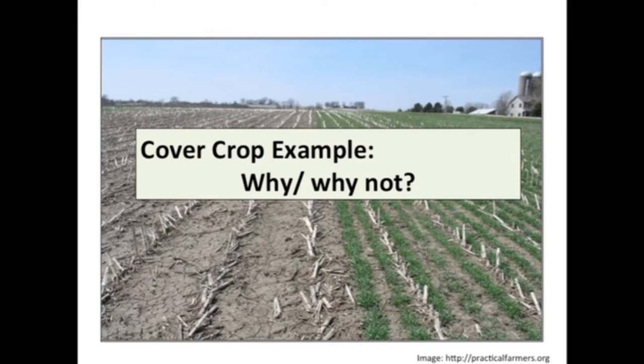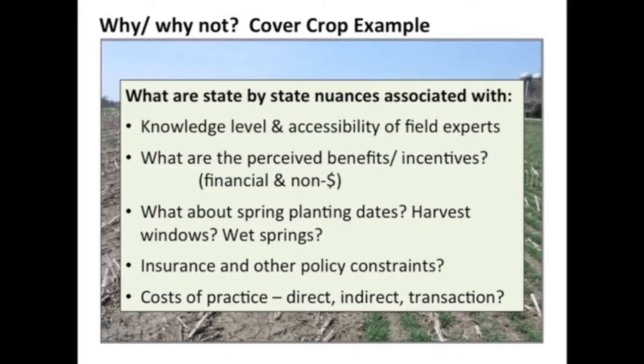Thinking about practices in the context of why and why not — using cover crops as an example — the conversation will cover state-by-state nuances in knowledge levels and access to knowledgeable people, perceived benefits or incentives financial or otherwise, management issues like spring planting dates, harvest windows, and what happens if it's a wet spring. Also how that impacts insurance policies or other policies that create constraints, and the costs of practices — direct, indirect, transaction-oriented costs, and even opportunity costs.